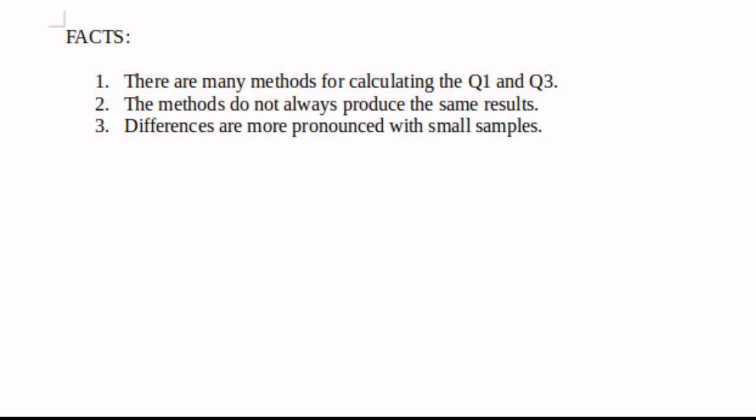So if you're using a method different than mom is, then chances are your results will be different. R itself has nine different methods for calculating quantiles.